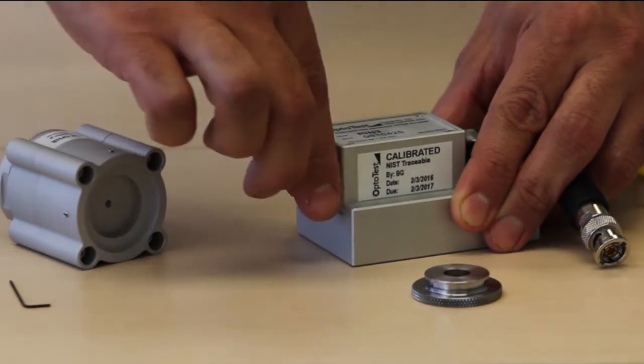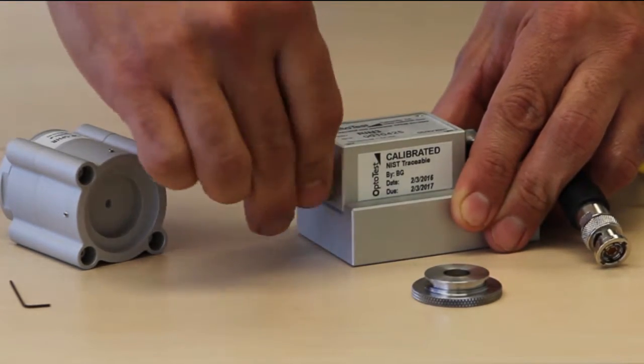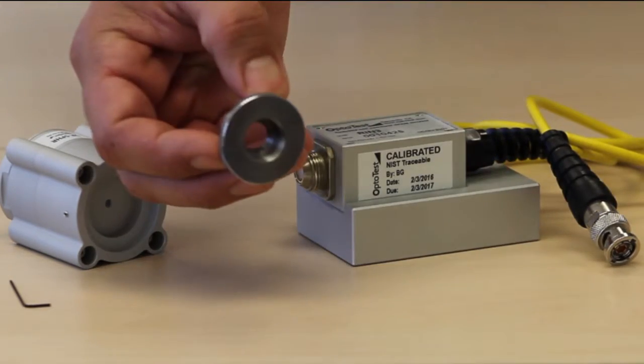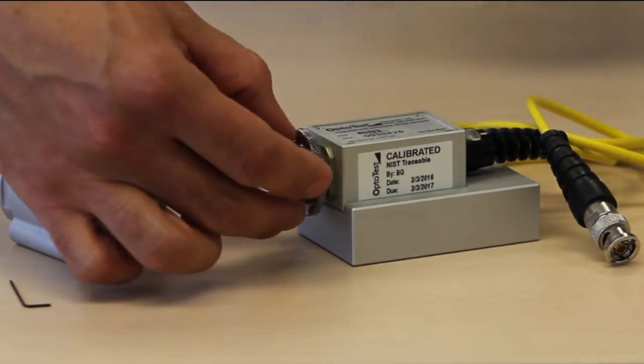Next, screw the OP sphere's mounting ring into place on the threading as if it were any other adapter. Make sure to have the larger diameter closer to the detector.